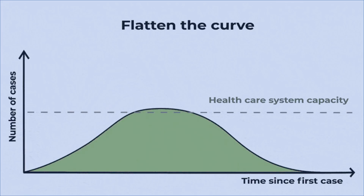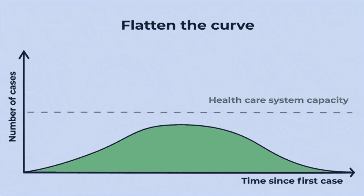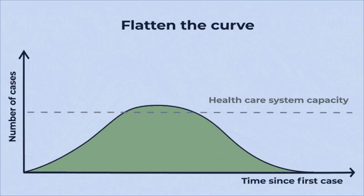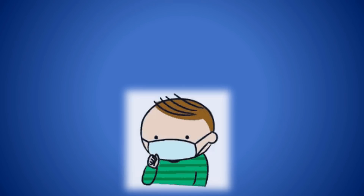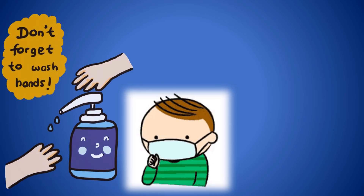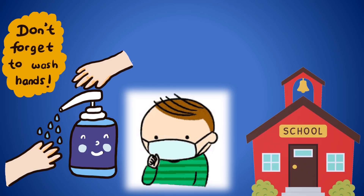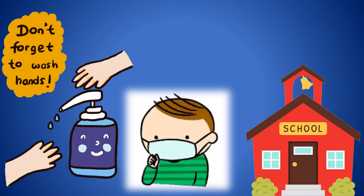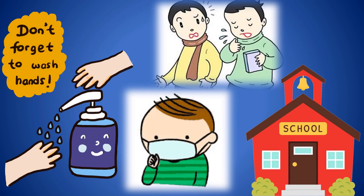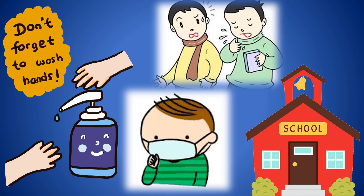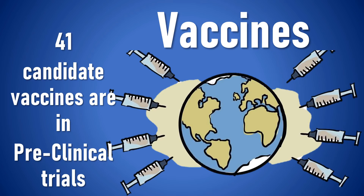The goal right now is to flatten the curve. Social distancing measures like self-isolation, sanitization, closure of schools or workplaces, and reduction in person-to-person contact will help in flattening the curve.